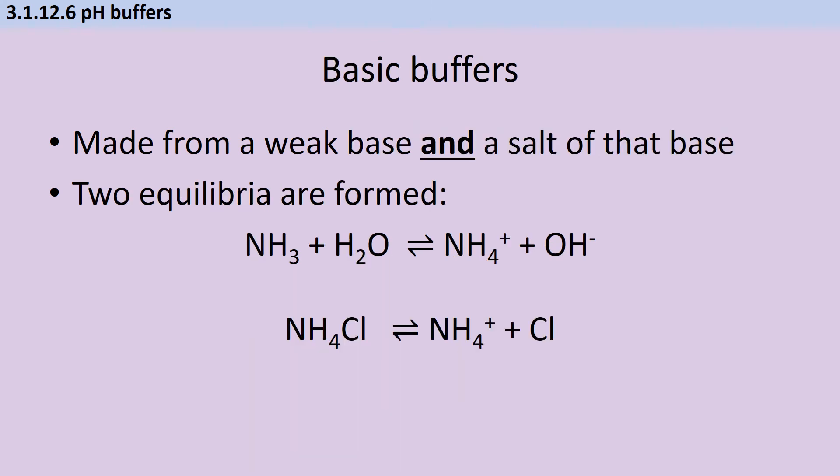In a basic buffer, which buffers pHs higher than 7, I need a weak base like ammonium hydroxide and a salt that contains the same cation. Here, ammonia in water forms ammonium hydroxide, which only dissociates slightly. We also have ammonium chloride, the salt, which fully dissociates as it dissolves, producing far more ammonium ions than I get from the ammonium hydroxide dissociating.